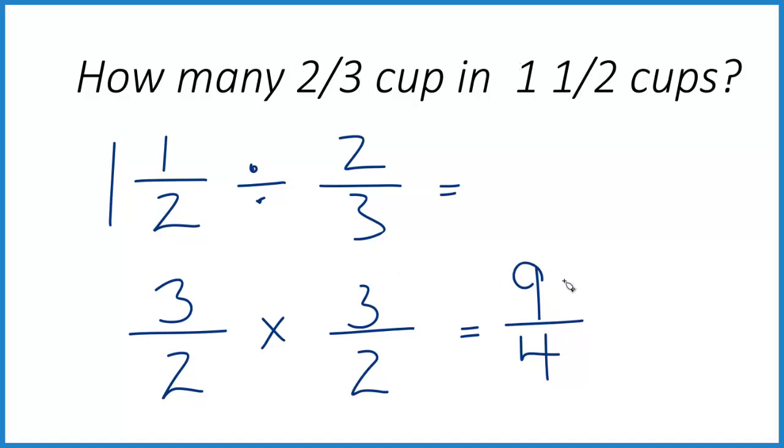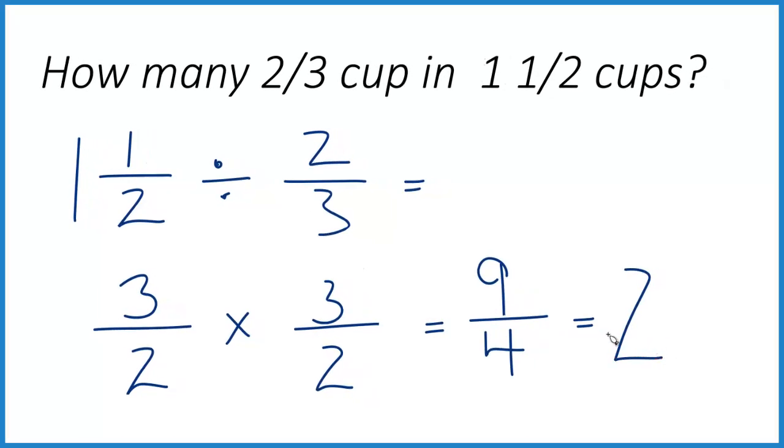We could change this to a mixed number. It might be a little clearer. Four goes into nine two times, because two times four is eight. We have one left over. Keep the four the same. So instead of nine-fourths, we could say that this two-thirds cup measure will have two and one-fourth of these two-thirds cup measures in one and one-half cups.